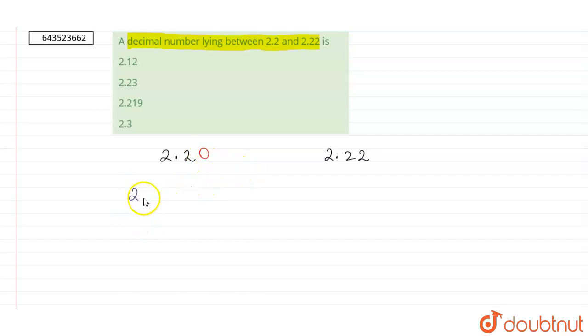Our first number is 2.12. Now 2.12 is less than 2.20, so it does not lie between 2.2 and 2.22.